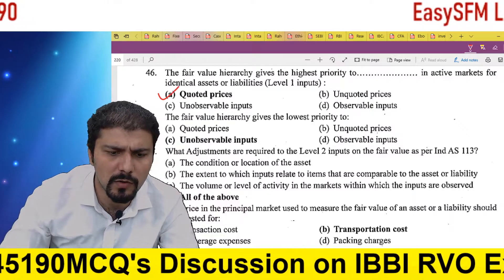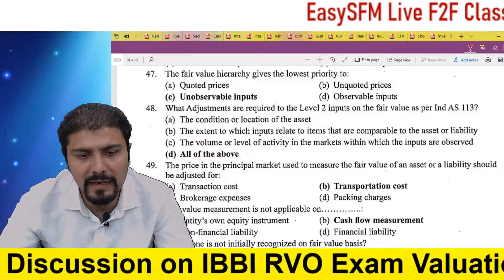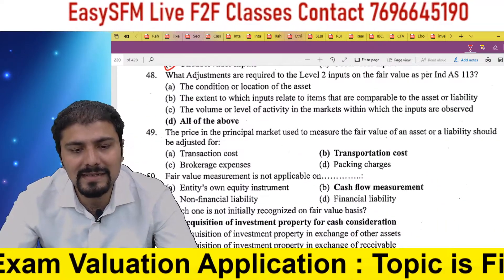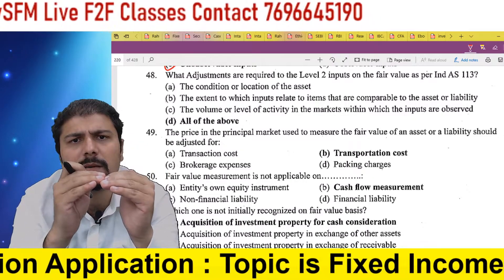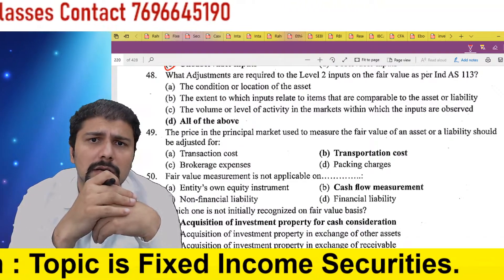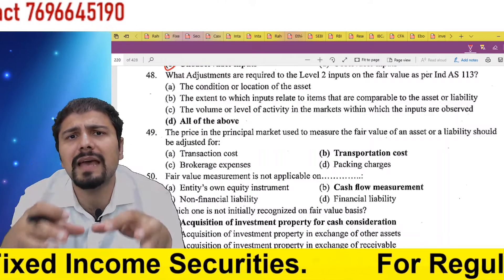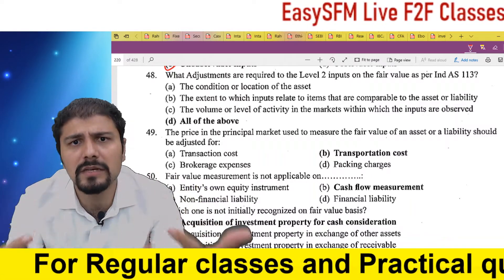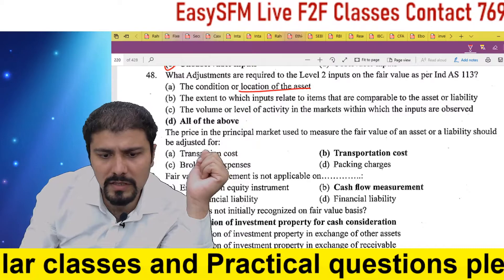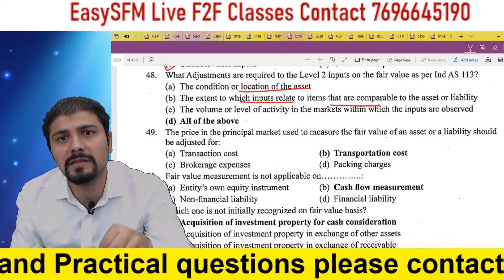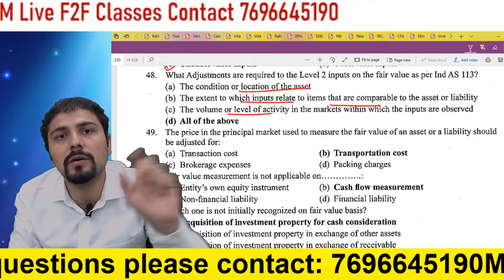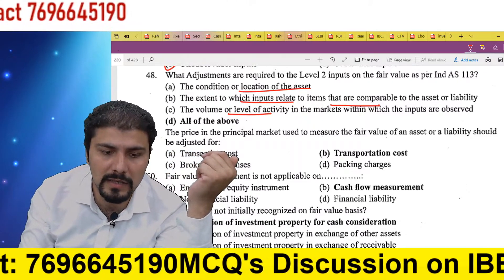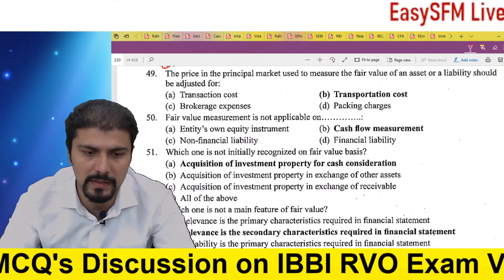Fair value hierarchy has three levels. At Level 1 are quoted prices. Fair value hierarchy gives the lowest priority to unobservable inputs — those least observable get the lowest priority. When adjustments are required to Level 2 inputs: if something is not quoted in the market, we go to Level 2 inputs. For Level 2, we need adjustments based on the asset's condition, location, extent to which the input relates to the item, and the volume or level of activity — for example, if we sell only 4 units but the market data is for 4 lakh units, we must adjust accordingly before using Level 2 inputs.